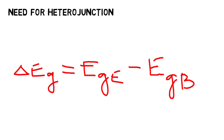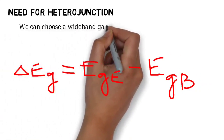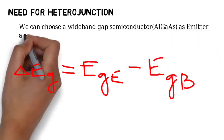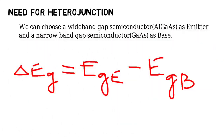So the difference in energy band gap between emitter and base is ΔEg. In order to increase the beta of the transistor, we can choose a wide band gap semiconductor as the emitter. We will use aluminum gallium arsenide (AlGaAs) as the emitter — it is a wide band gap semiconductor when compared to gallium arsenide (GaAs), which is a narrow band gap semiconductor.